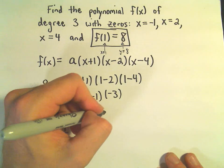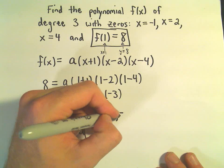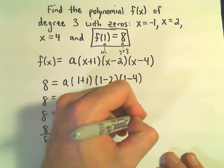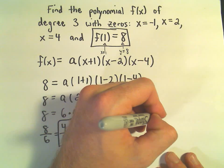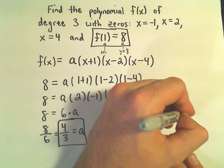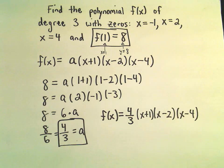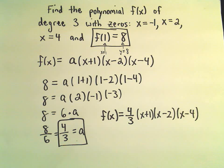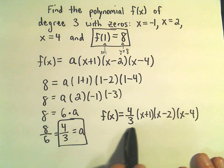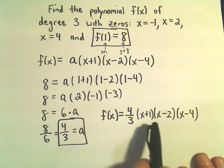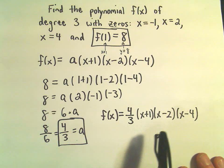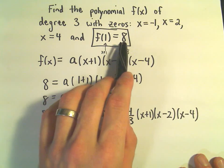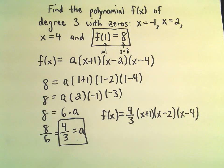So our polynomial is f of x equals 4 thirds times x plus 1 times x minus 2 times x minus 4. And of course, if you wanted to at this point, you could even multiply all this out. But I'm going to leave it right there. This is our polynomial with the given zeros of degree 3, and this coefficient will make it go through the y coordinate of 8 when we plug in x equals 1.